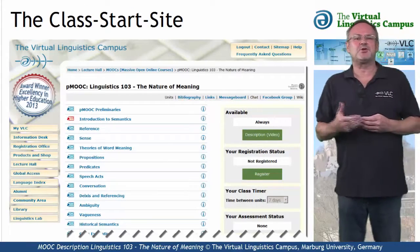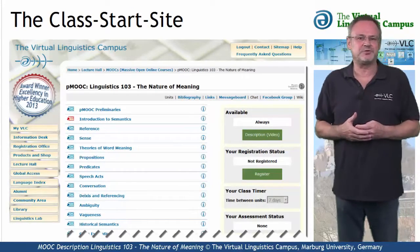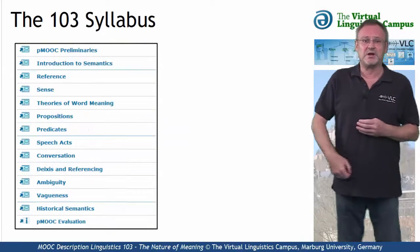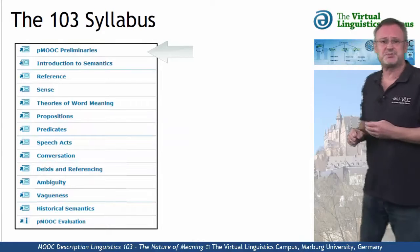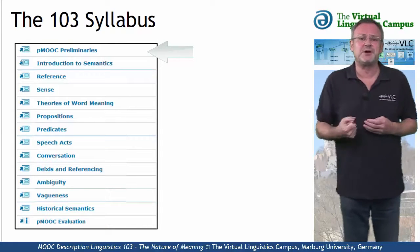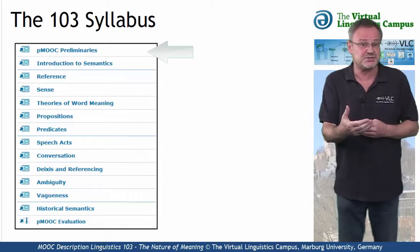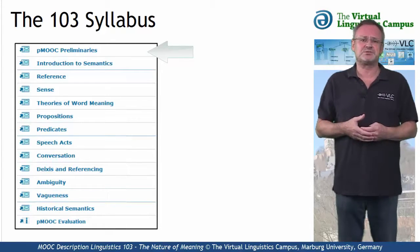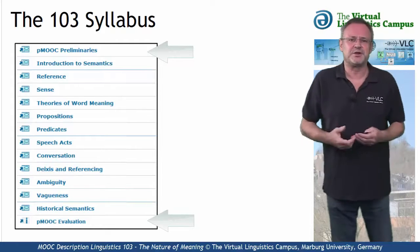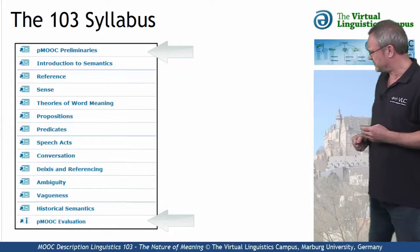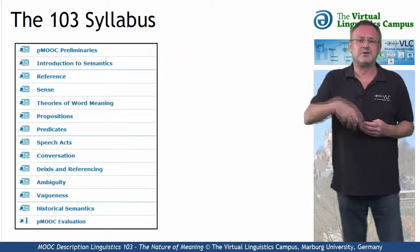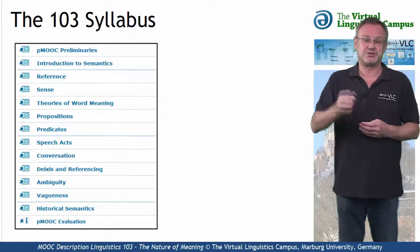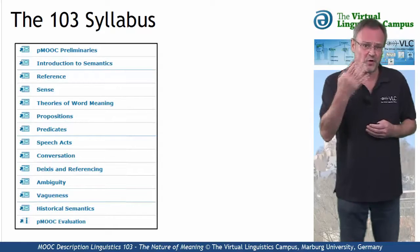Let us now look at the content of Linguistics 103. The class consists of 13 units where the first one, the class preliminaries, informs you about some general aspects of the class and discusses what it means to study online on the Virtual Linguistics Campus. The last unit is your option to evaluate the class. The remaining units exhibit the content of this class, subdivided into four main parts.